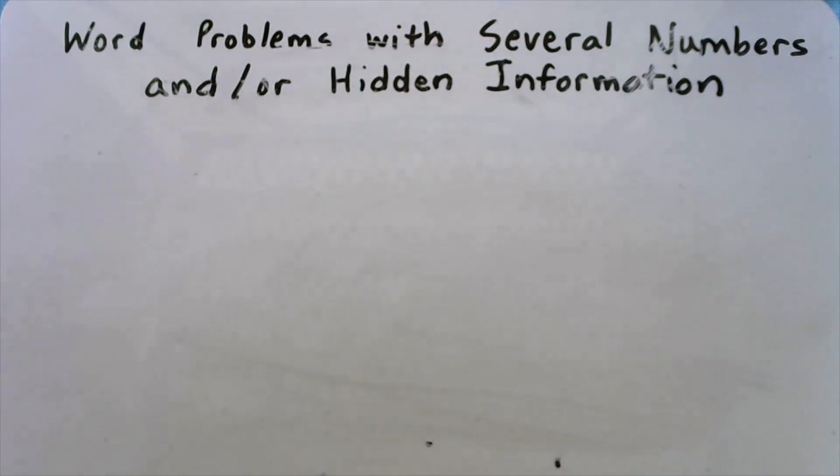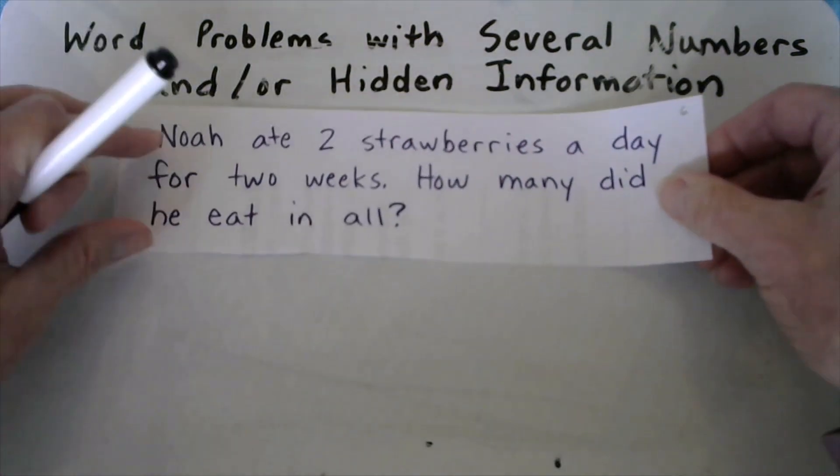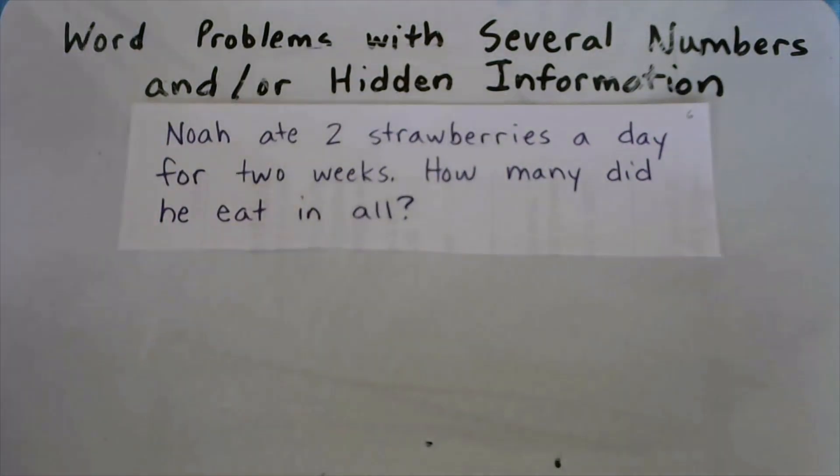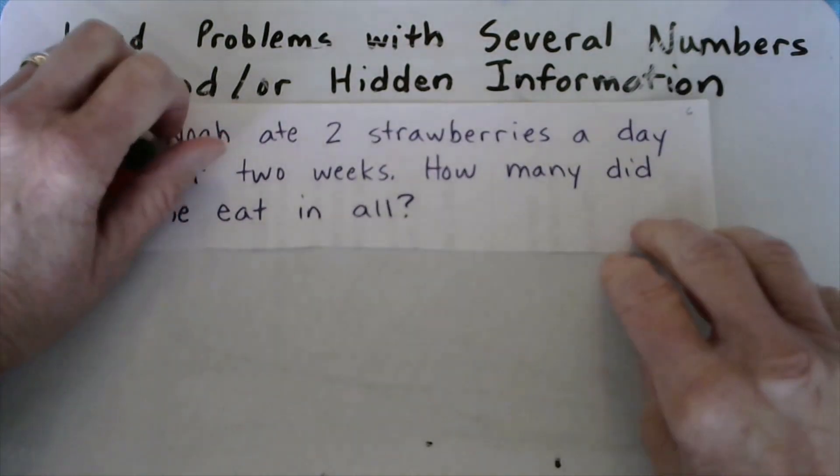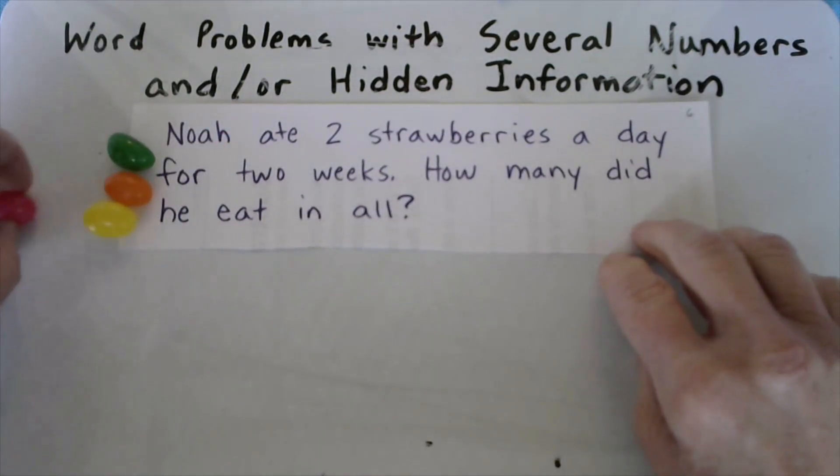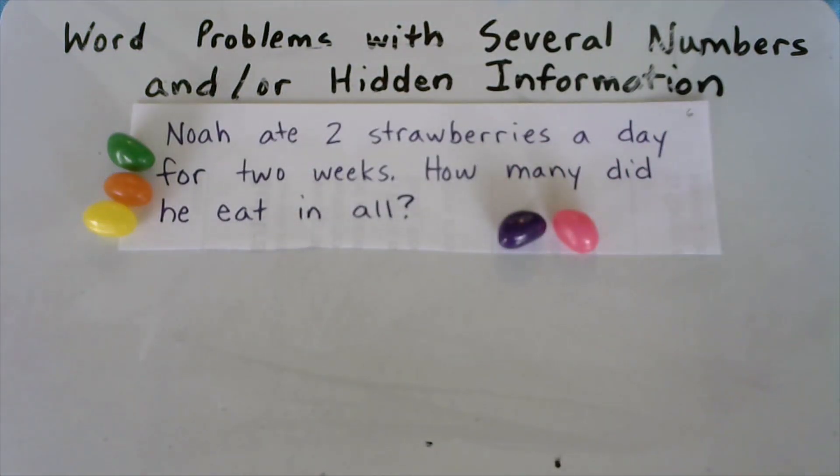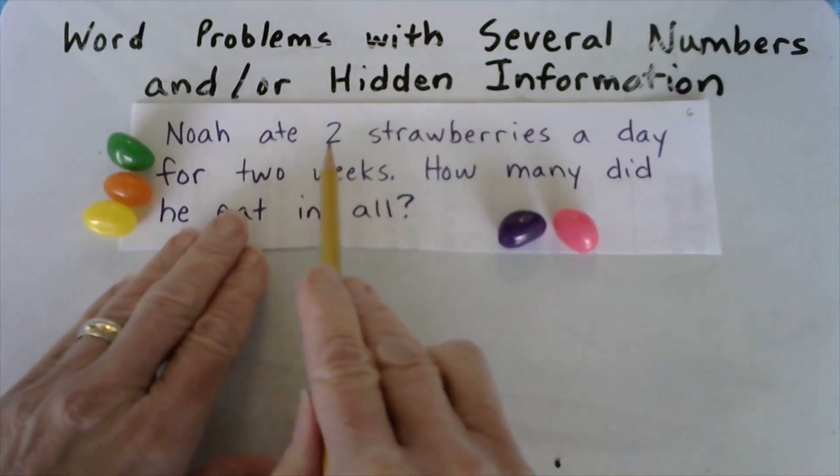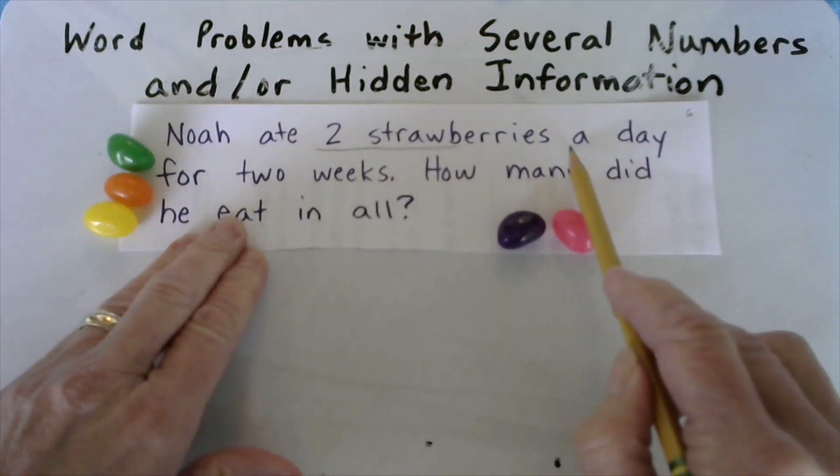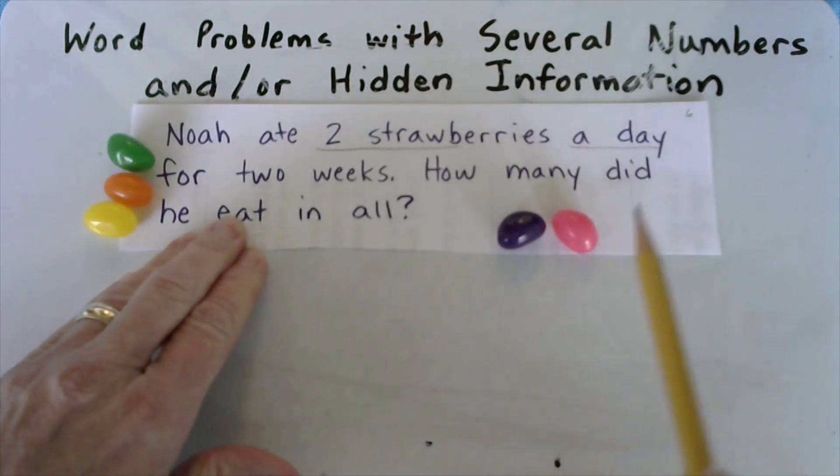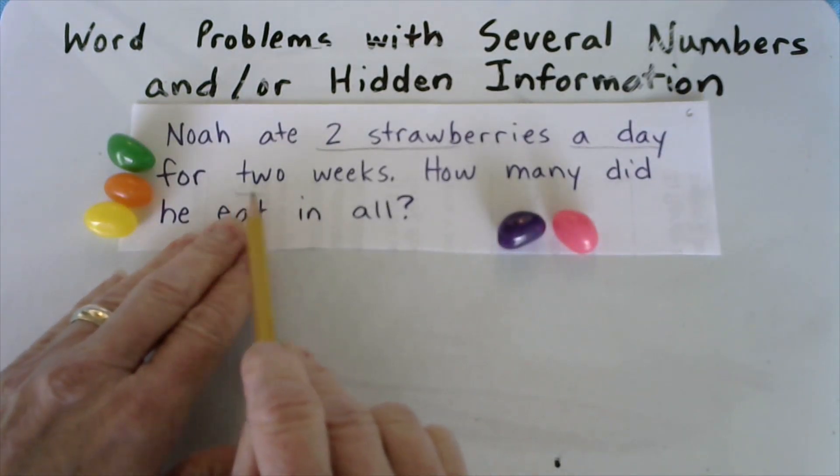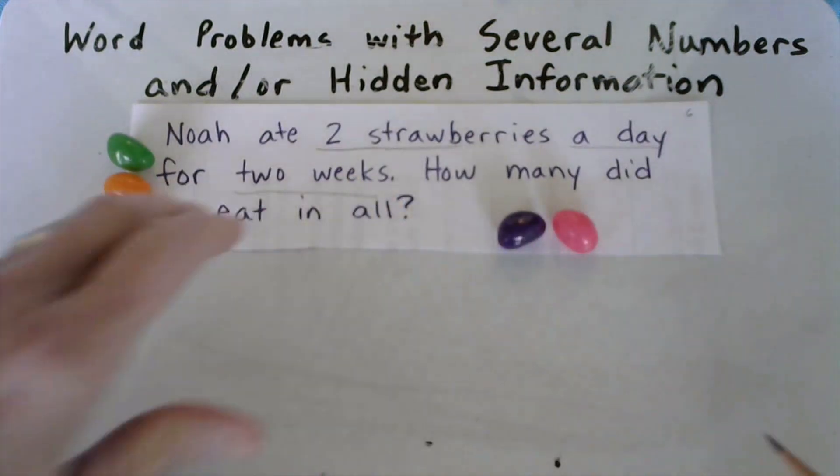Last one. We're going to beat the storm. Here's the final problem. It is about Noah. Noah ate two strawberries a day for two weeks. How many did he eat in all? Now, what do we know about Noah? We know he ate two strawberries per day. And for how long did he do this? He did this for two weeks. Now think about where there's a hidden number in this problem and pause the video and solve.